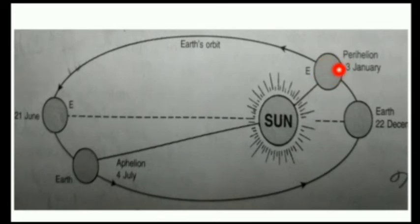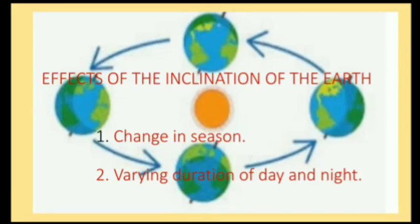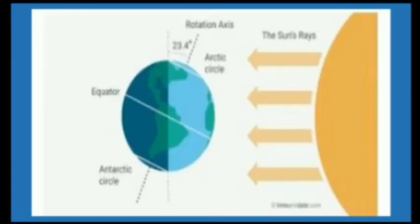Effects of the inclination of the Earth: the Earth is inclined on its orbital plane — the plane of the ecliptic — at 66 and a half degrees, and from the vertical it is 23 and a half degrees. The effects of this inclination on the revolution of the Earth are: first, change in seasons; and second, varying duration of day and night.